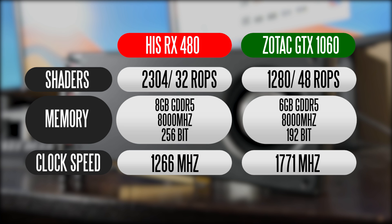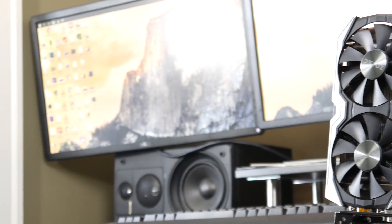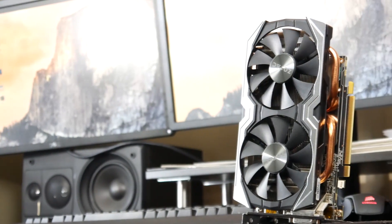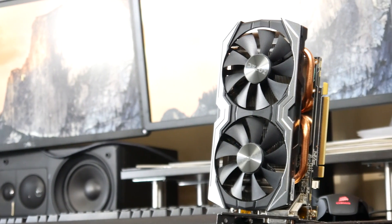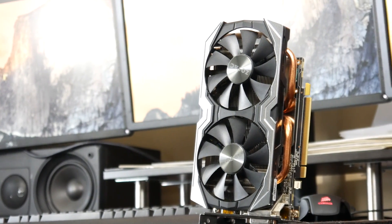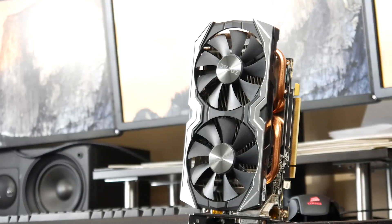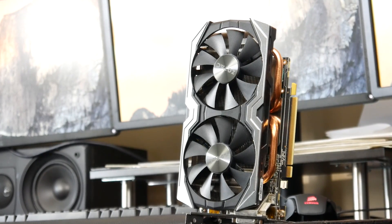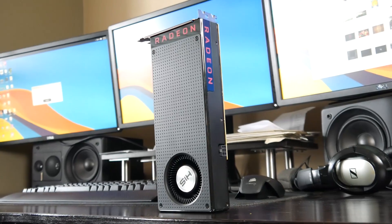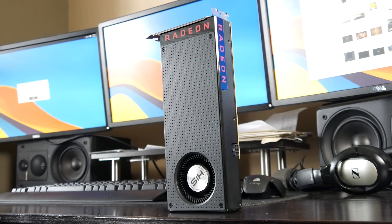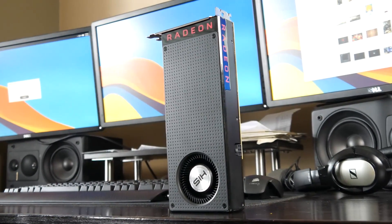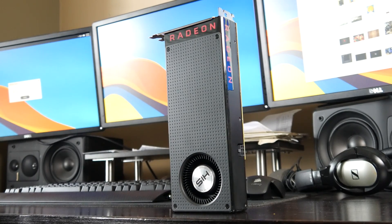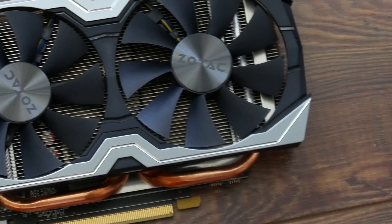When it comes to overall core clock speeds, the 1060 is really fast. In fact, the AMP edition from Zotac that we have here runs at over 1700 megahertz on its boost frequency, versus the RX 480 which runs around 1266 megahertz on its factory settings.